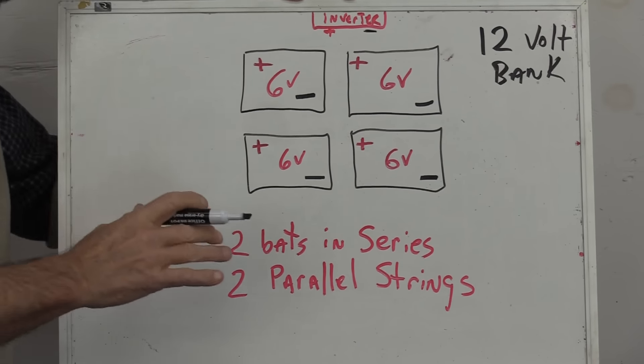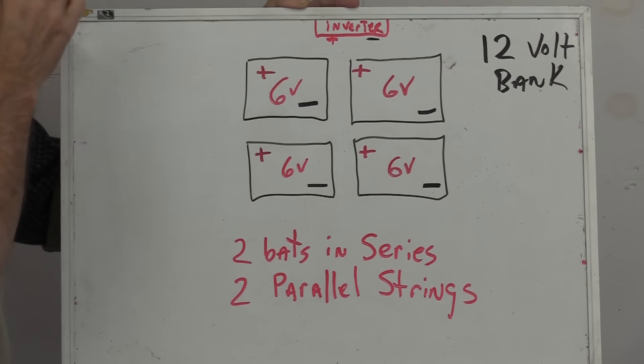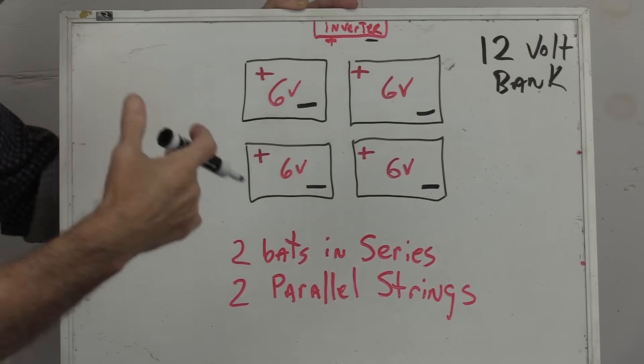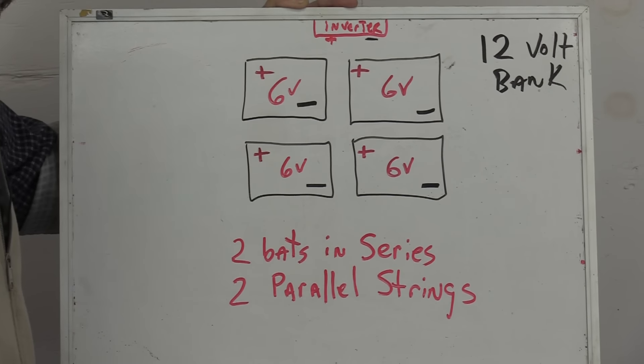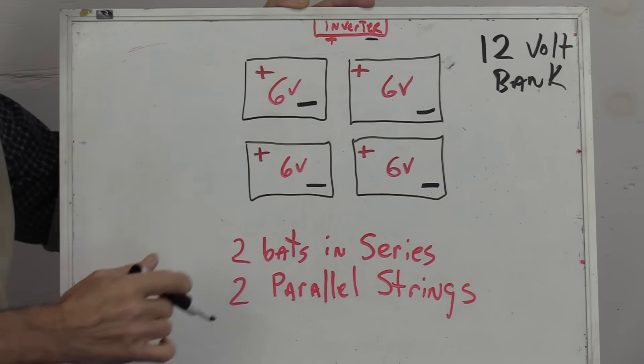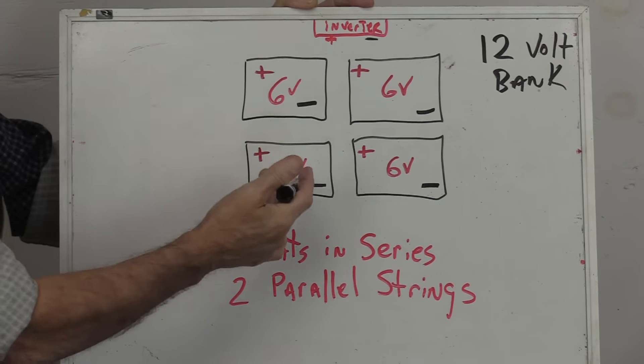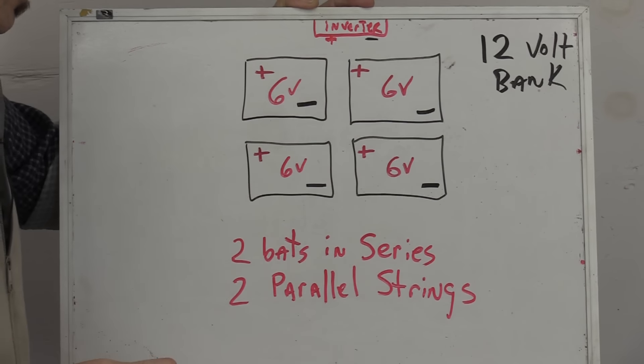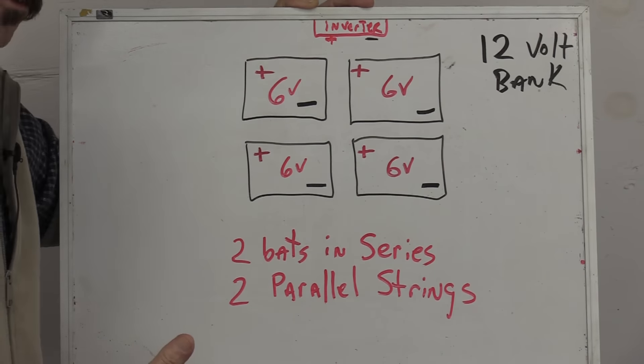I should have covered this in part one of batteries for beginner but I've had to make a second one now. This will be over six volt batteries if you're using say six volt Trojan batteries and you want a 12 volt bank but you've got several six volt batteries.